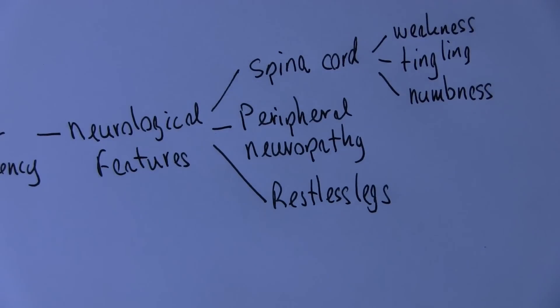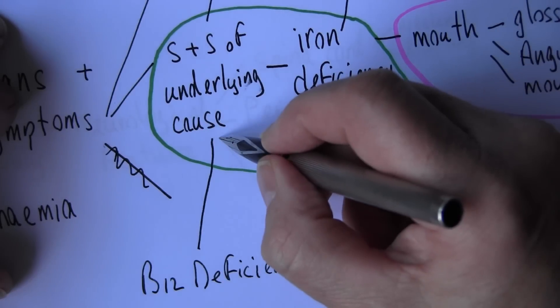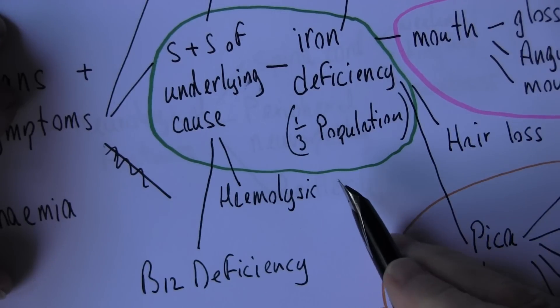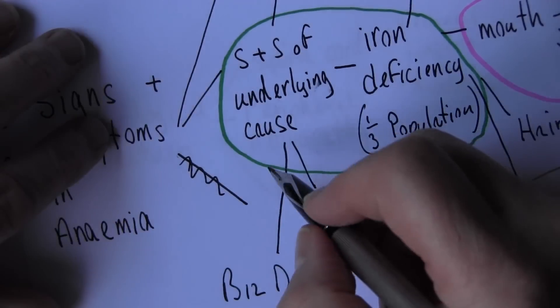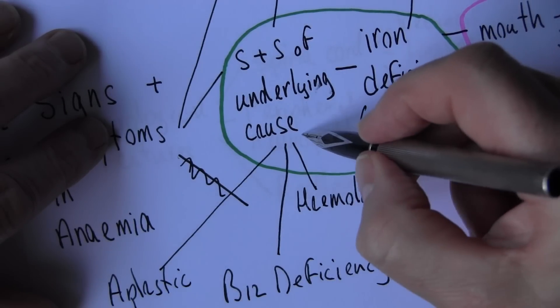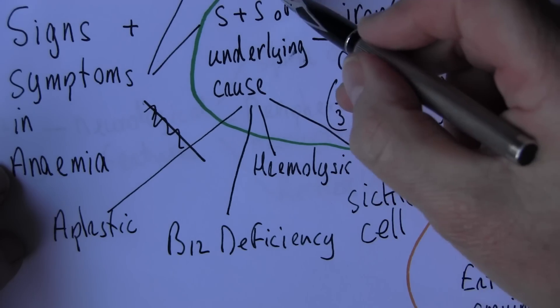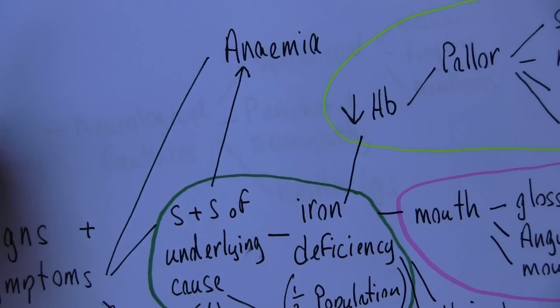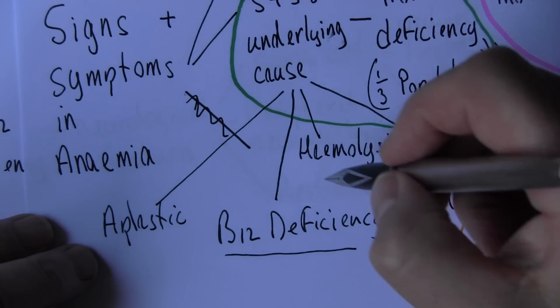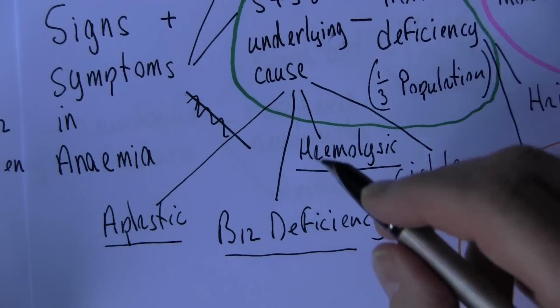Now there's other underlying causes that we can think about. So other lines that can go from this bit, the underlying cause. For example we could have hemolytic anemia. So there can be signs and features caused by the hemolysis. There can be aplastic anemia. And there can be sickle cell disease. So these are all underlying causes of anemia, but they can generate their own clinical features. So we've looked at the clinical features of B12 deficiency. Let's look briefly at the clinical features of hemolysis that you get in hemolytic anemia, aplastic anemia and sickle cell disease. Looking at the signs and symptoms of the cause.